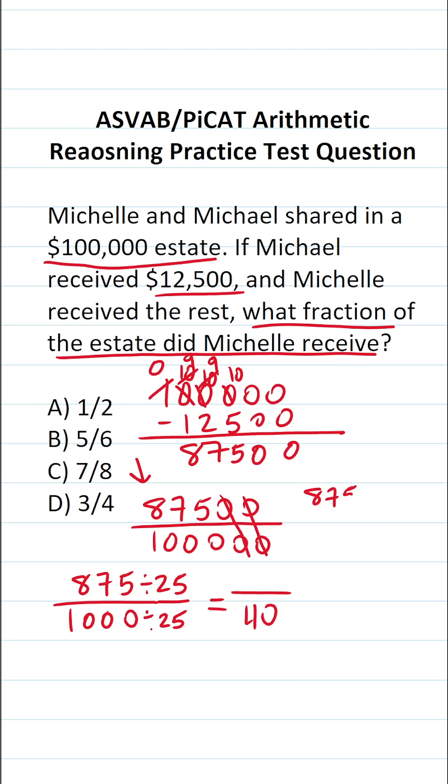What is 875 divided by 25? 25 goes into 87 three times without going over. 25 times three. 7 minus 5 is 2. 8 minus 7 is 1. Drop down this 5. 25 goes into 125 five times without going over. 25 times 5 is 125 with no remainder.